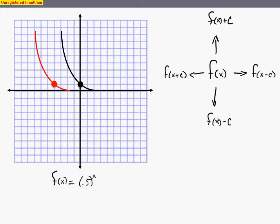In this video we're going to examine different translations. Mainly we're going to examine the translations that move a function upwards, to the right, down, and to the left. So I'm going to be starting off with this black function right here which is known as f, and the function is actually given as 1 half or 0.5 to the x.